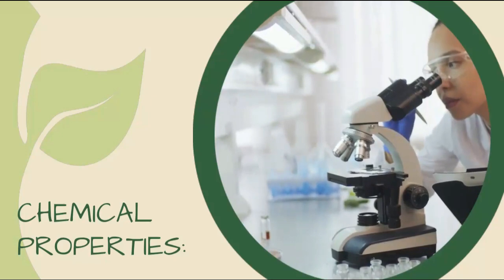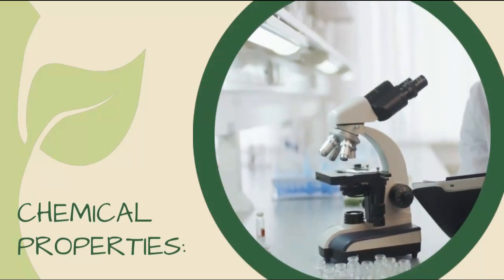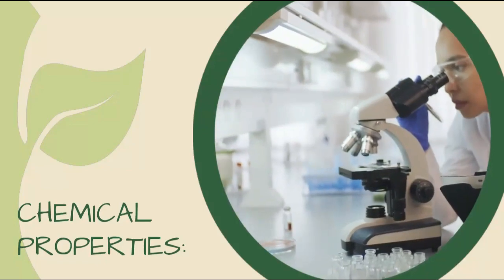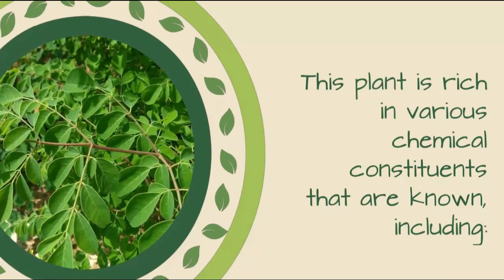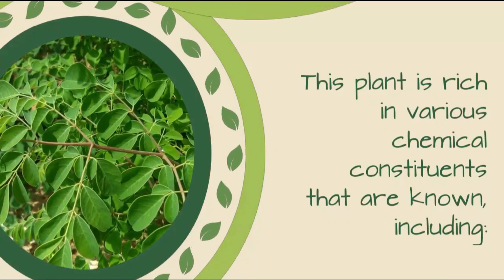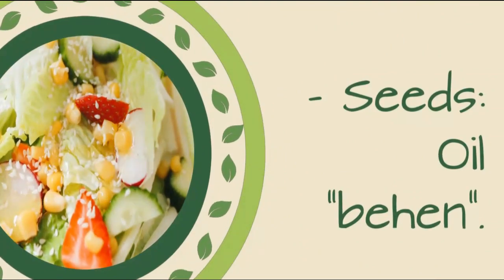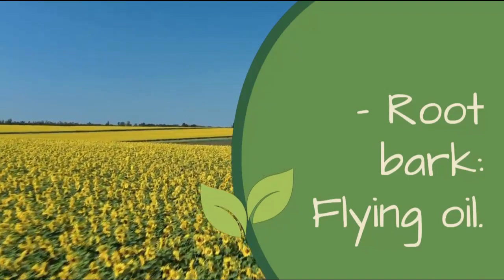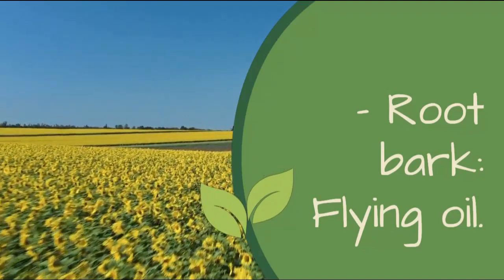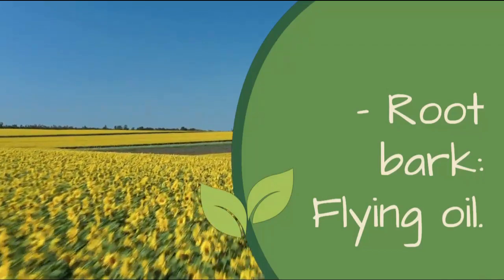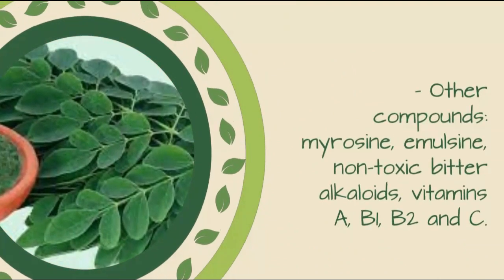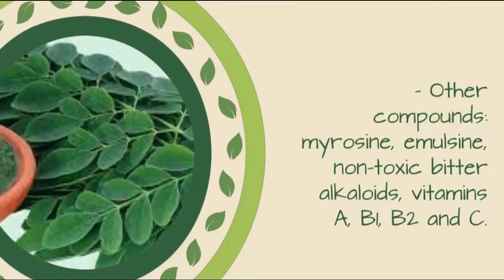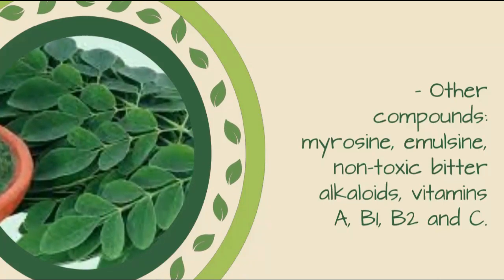Chemical Properties: This plant is rich in various chemical constituents, including: Seeds — oil behen; Root bark — flying oil; Other compounds — Myrosine, Himmelsin, non-toxic bitter alkaloids, and vitamins A, B1, B2, and C.